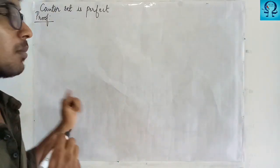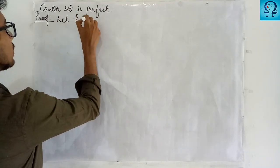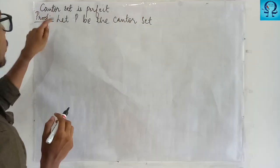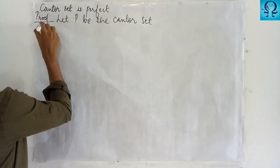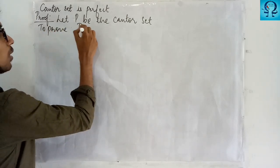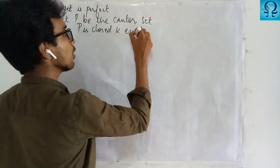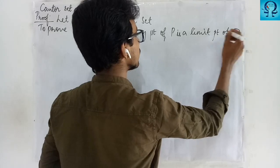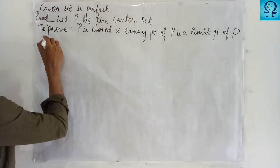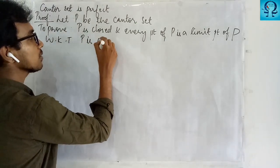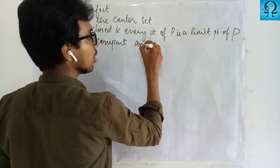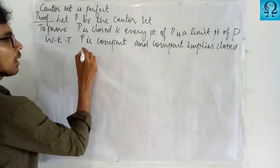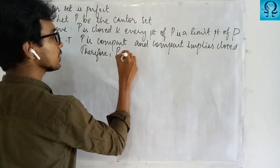Now we are going to prove the Cantor set is perfect. Let P be the Cantor set. To prove P is perfect, I have to prove P is closed and every point of P is a limit point of P. We know from the construction of the Cantor set that P is compact, and all compact sets are closed. This proves P is closed.